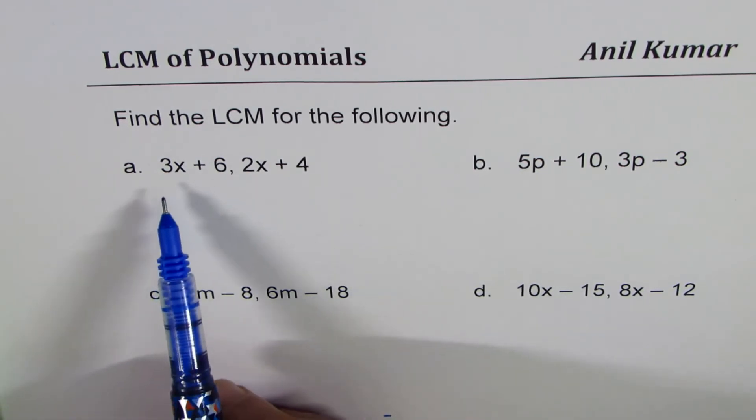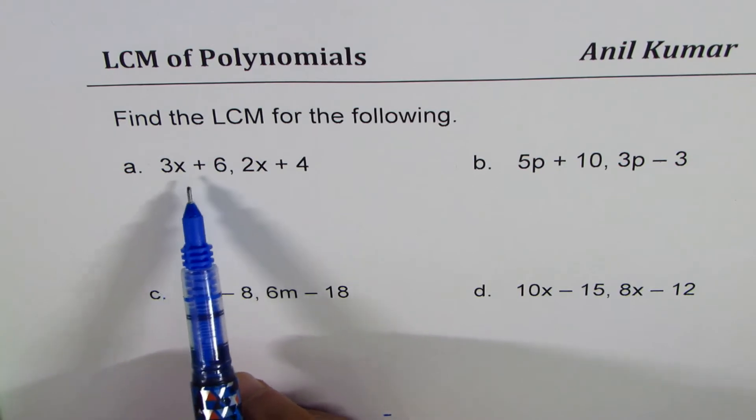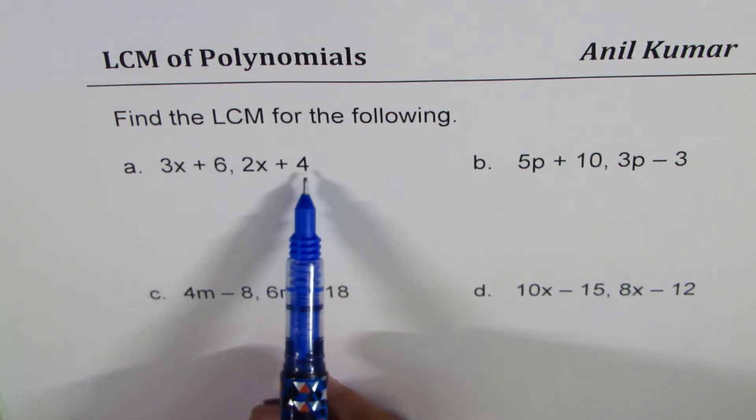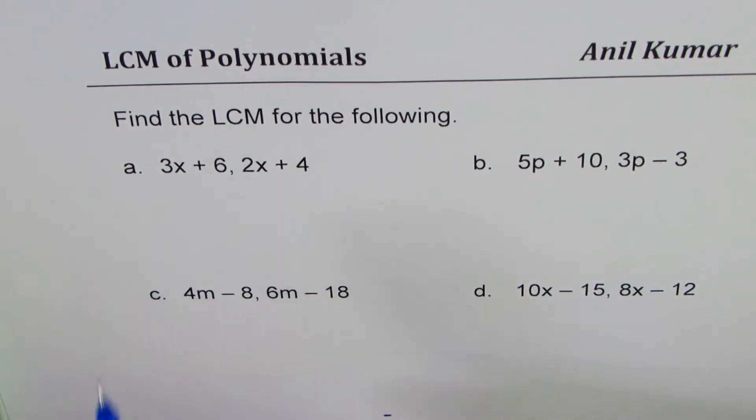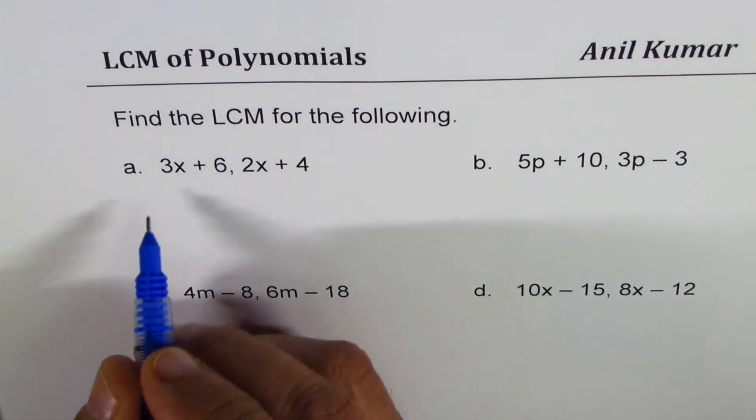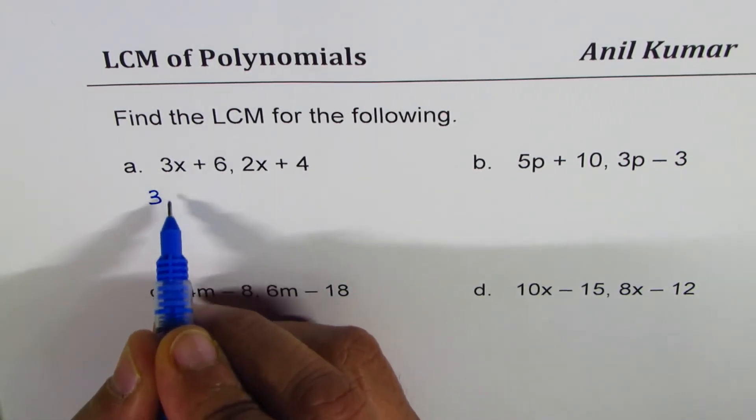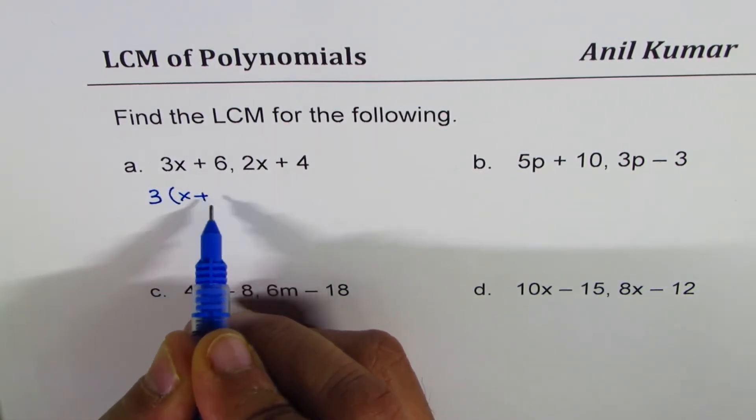Let's begin with the very first one, which is 3x plus 6 and 2x plus 4. The idea is to factor them. 3x plus 6, I can take 3 as a common factor, I get x plus 2.